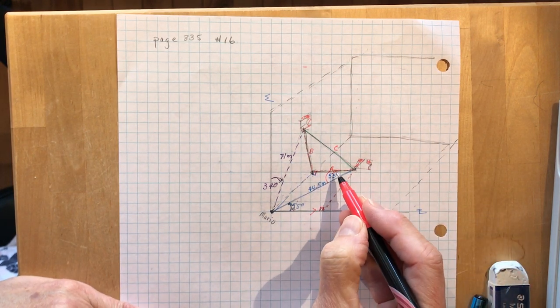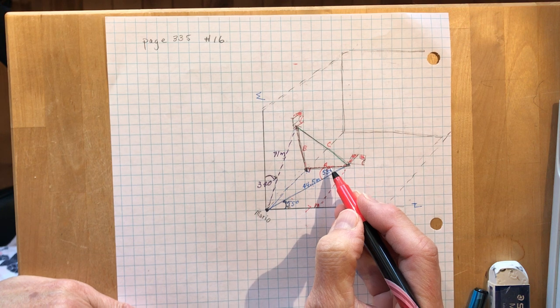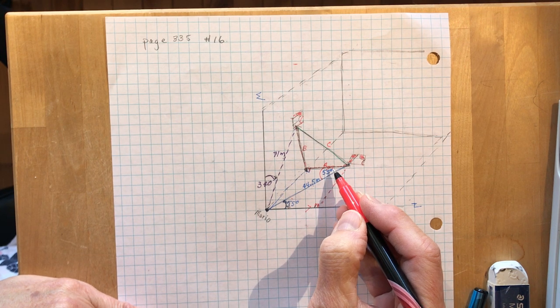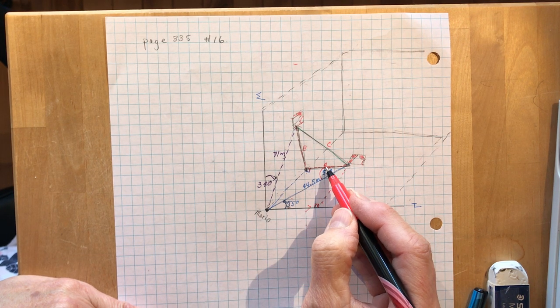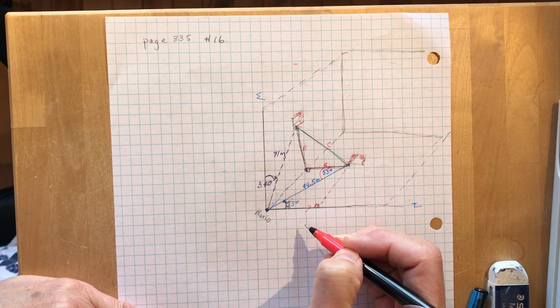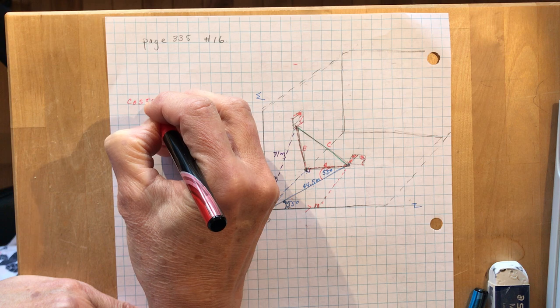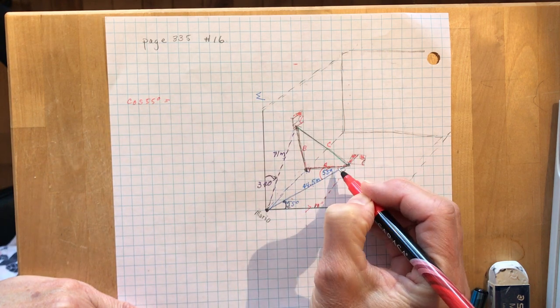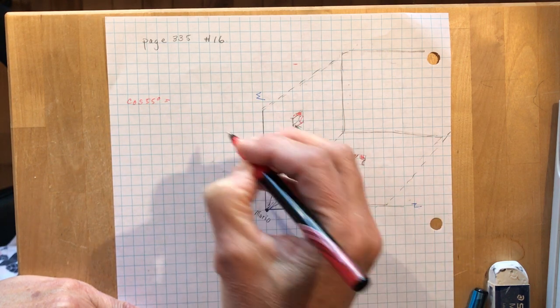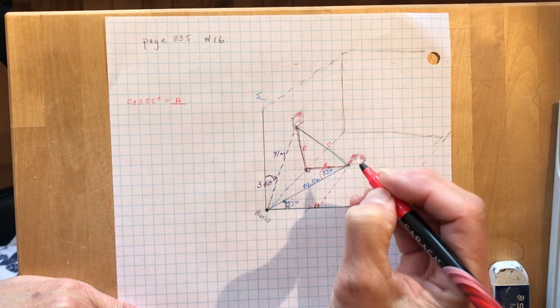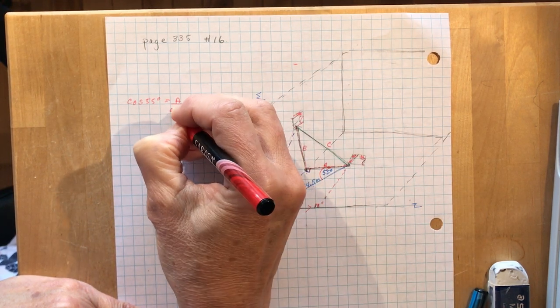Okay, so if I want to find A, that means the cos, I'm going to use cosine because I'm using adjacent and hypotenuse and 55 degrees. So the cos of 55 degrees is going to be equal to A over the hypotenuse, which is 44.5.